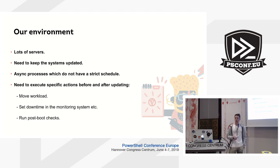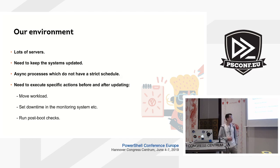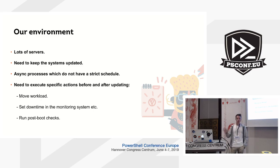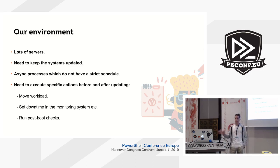We want to set downtime in our monitoring systems so we wouldn't receive any notifications that our host is down. And we also would like to run some checks after an update is installed to a host to ensure that we can use this host in production. The thing about processes which run asynchronously is that it's not very easy to tell an automation system that one host is busy right now and another can't be updated.